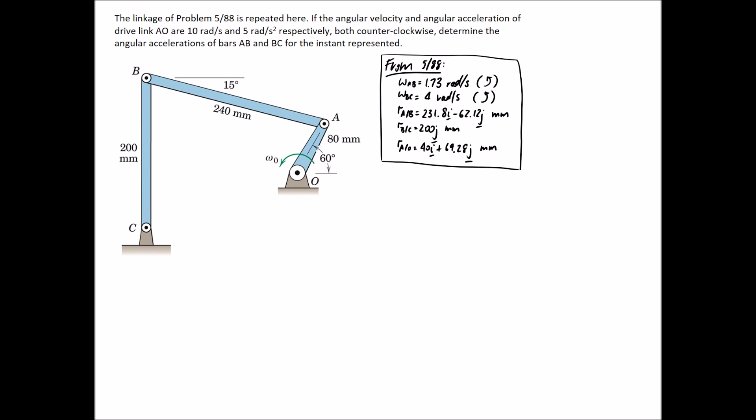So this time we're looking at finding angular accelerations of AB and BC. Let's assume a regular coordinate system. If we assume the z-axis is out of the page, that's going to mean that anti-clockwise is the positive direction. Since we don't really know which way these things are going to go, let's just assume they're positive.